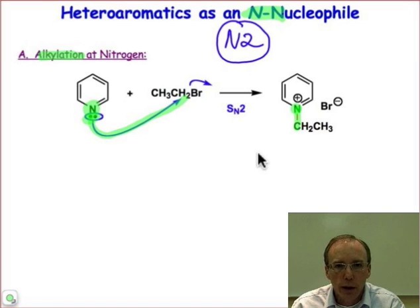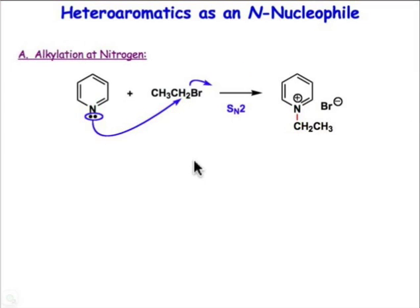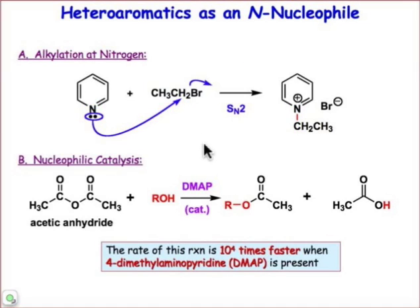It's just a straightforward SN2 reaction. That lone pair acting as a nucleophile can get involved, and it's especially important when it functions as a nucleophilic catalyst. Dimethylaminopyridine is a type of pyridine which has a very good electron-donating group — the dimethylamino group — that helps to stabilize that positive charge on the pyridine atom and makes that lone pair especially nucleophilic.